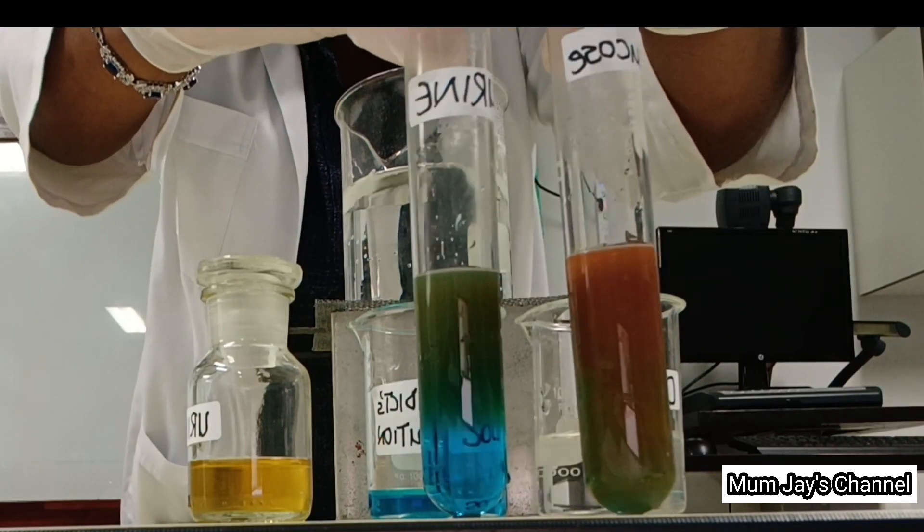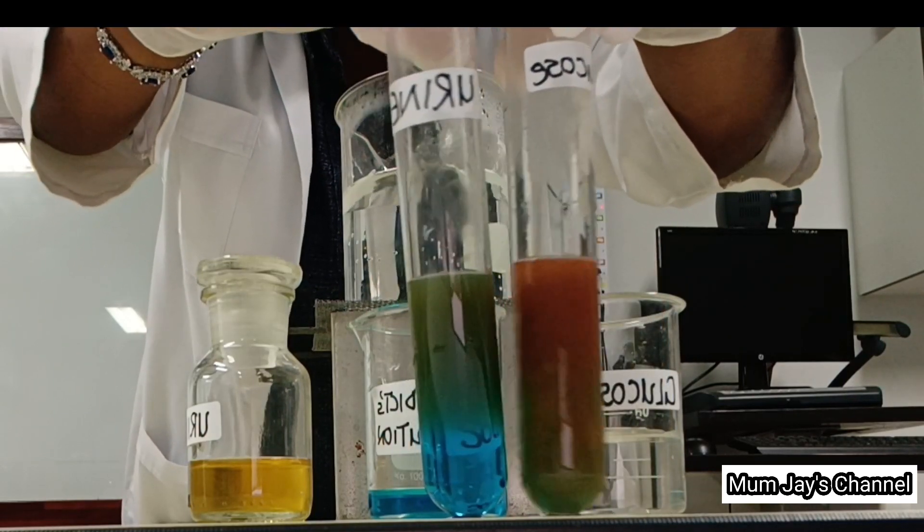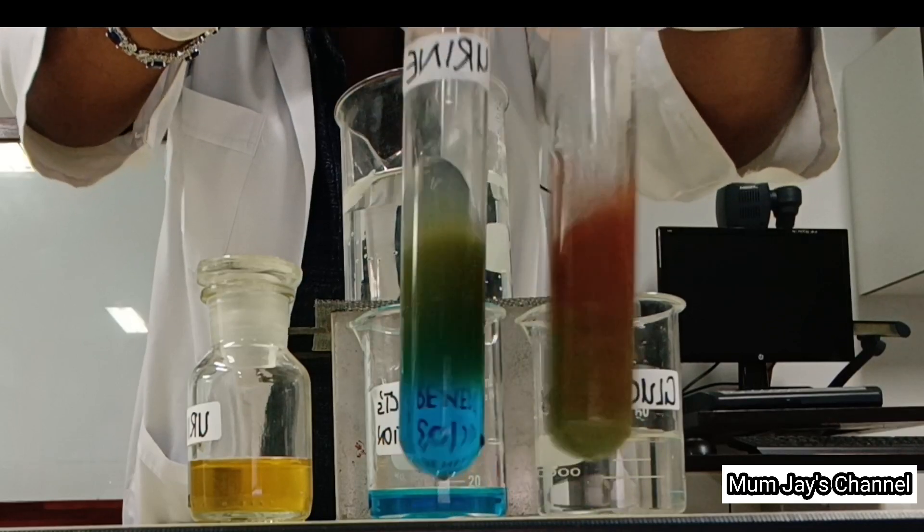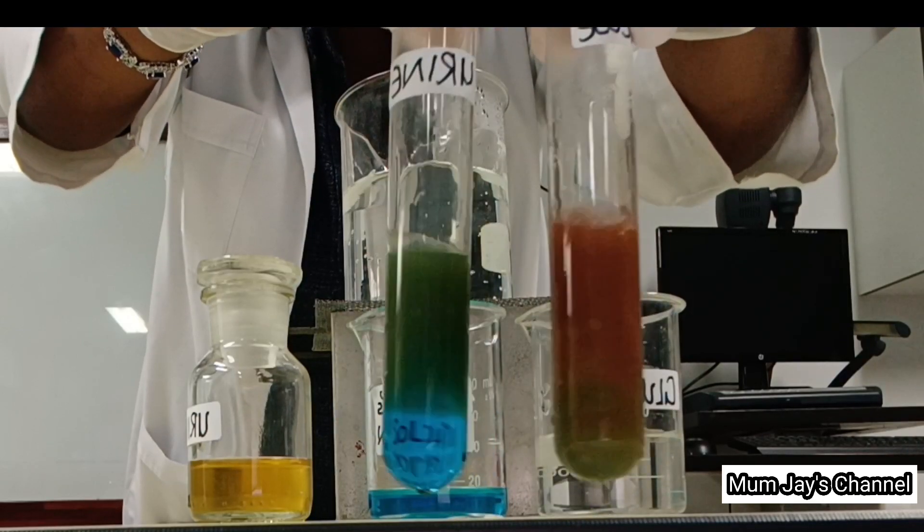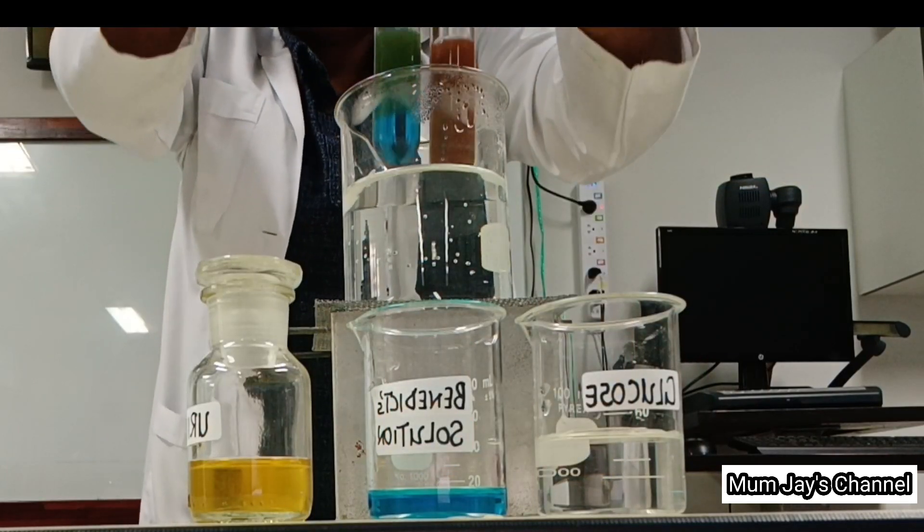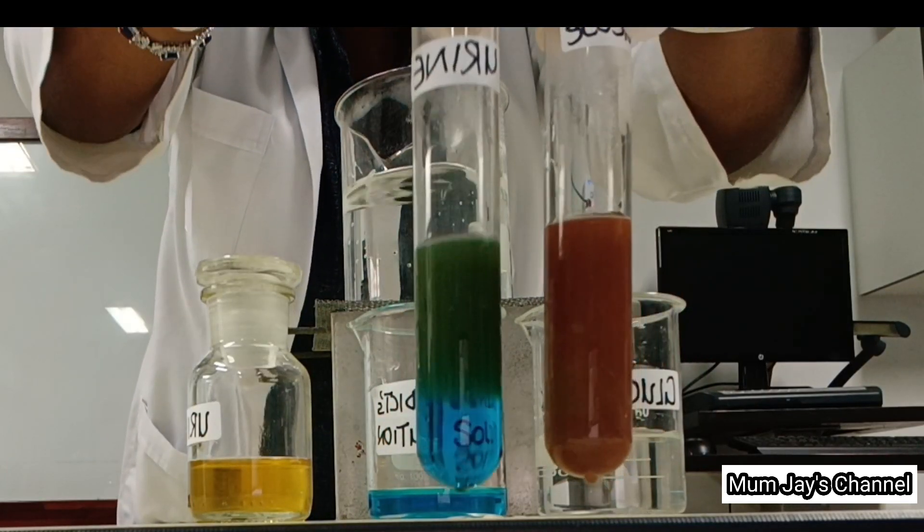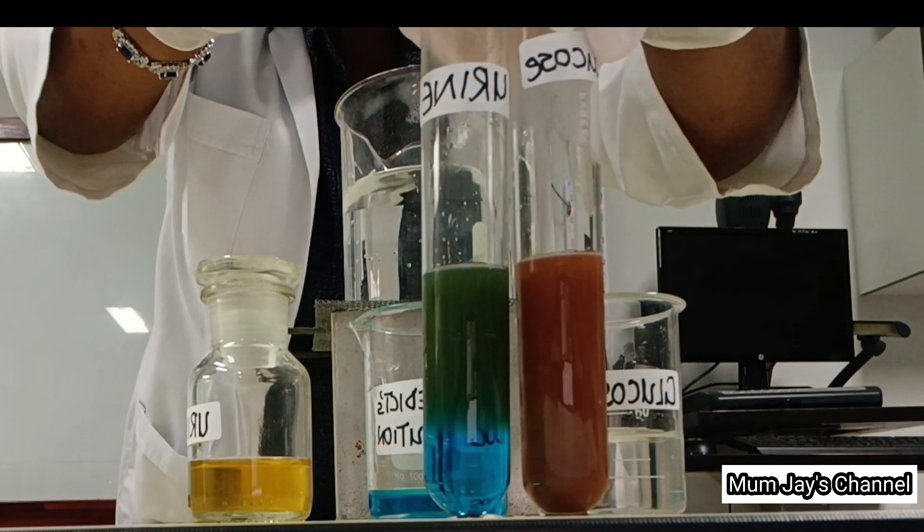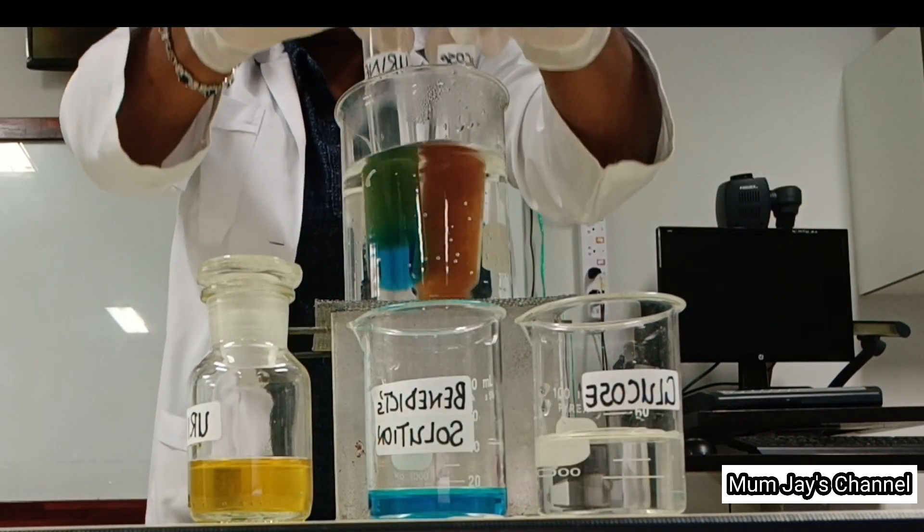You will notice a color change from the blue color of the Benedict's reagent to green and then to brick red. The brick red color indicates the presence of reducing sugars in the mixture.